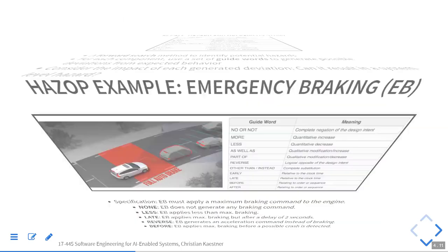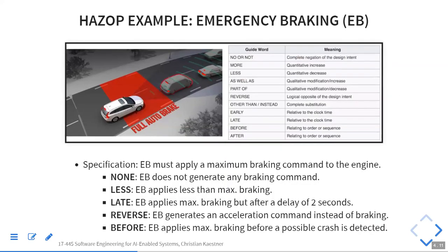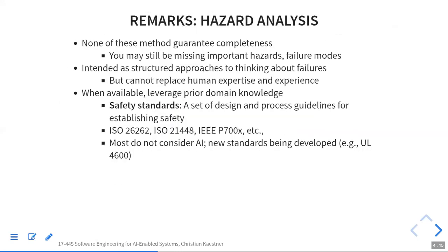We briefly talked about hazard analysis and other strategies based on inspection mechanisms. Most of these techniques are actually 50 years old or older, before we controlled most things with machines — and they're still very useful for component mistakes. They're even more useful now because we have machine learning components that are inherently unreliable. It's still very important to think about requirements, interactions of components, fallback mechanisms, and safety mechanisms.